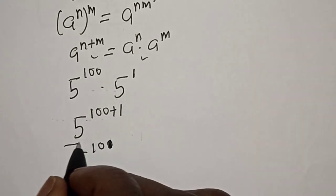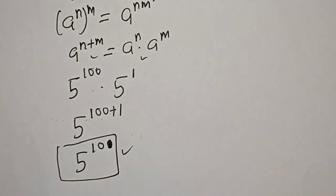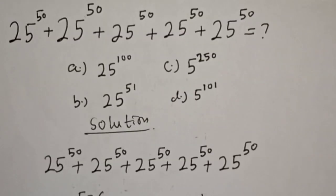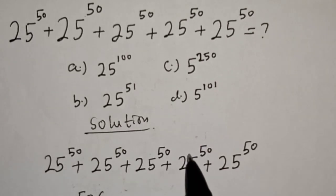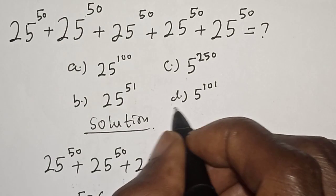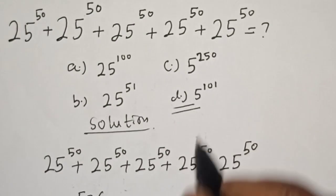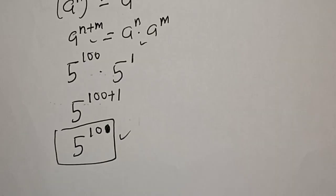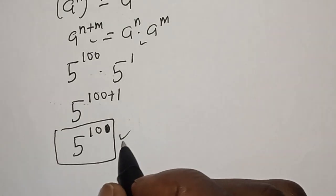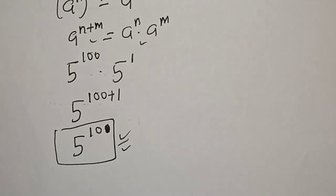This is our final answer. Looking at the options, D is the correct answer: 5 raised to power 101. If you enjoyed the class, please like, share, comment and subscribe. Thank you.